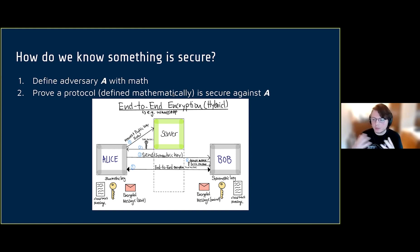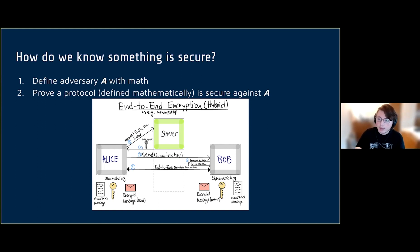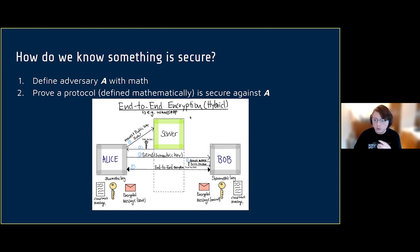I'm not going to go into any specific construction, but I want you to understand the process: we mathematically construct an adversary that tries to break our code, and then we prove that they can't break it. Just to give an example, this is a high-level view of what's called end-to-end encryption, which is how you would communicate with someone securely over a chat application like WhatsApp, Signal, or Facebook Messenger. Every time you use WhatsApp or Facebook Messenger and talk to someone, this process is occurring — mathematical key exchanges, encrypting messages, sending encrypted messages, decrypting them with certain keys.